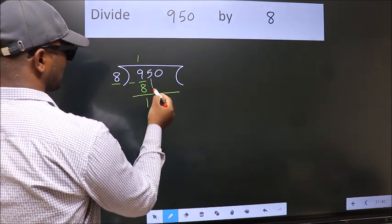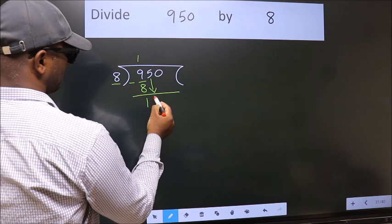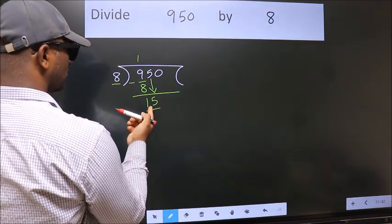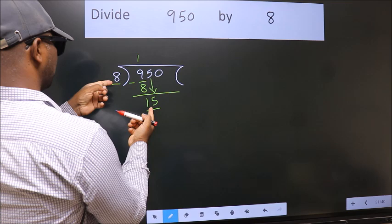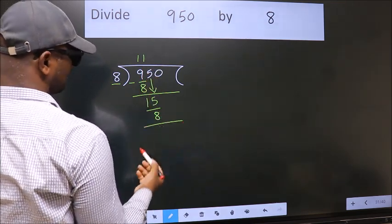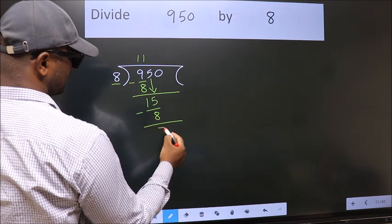After this, bring down the beside number. So 5 down. So 15. A number close to 15 in 8 table is 8 once 8. Now we subtract. We get 7.